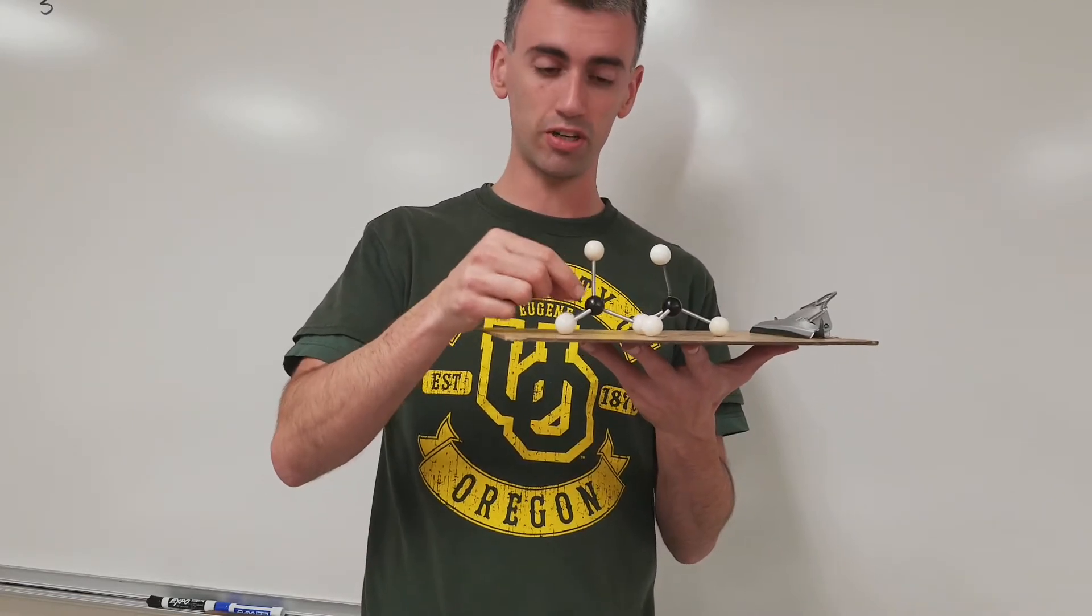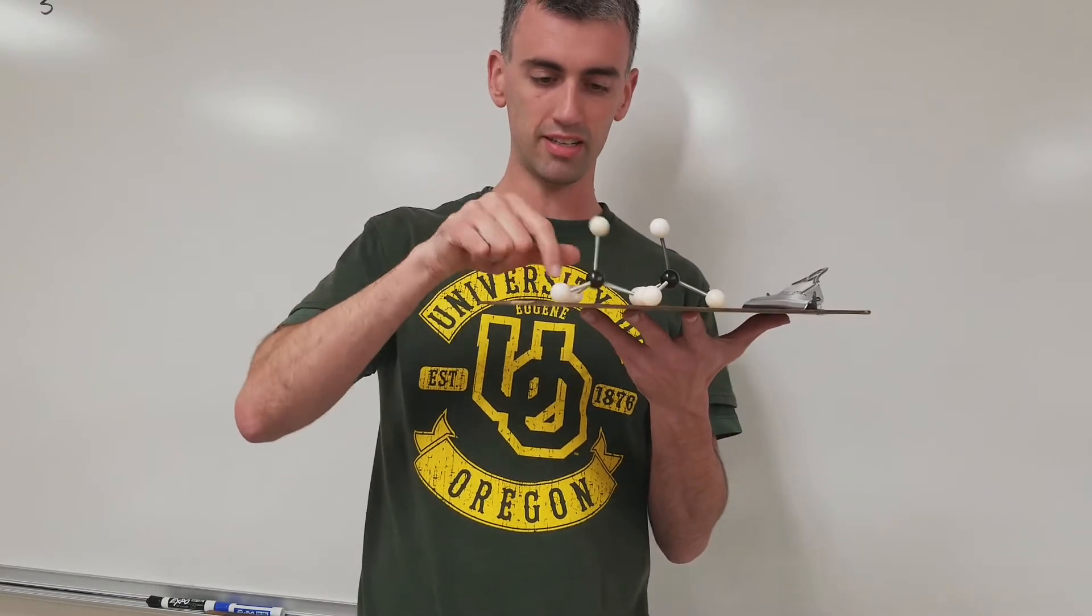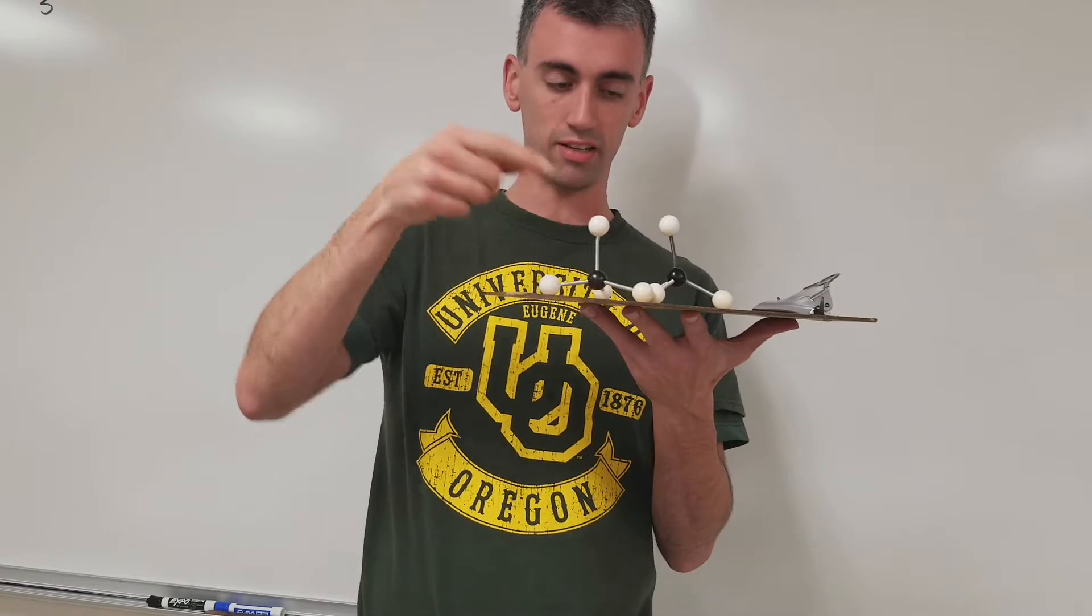The chemical bond is two shared electrons. This is two shared electrons, and so is this, and this, and this. So these are all two electrons: two, four, six, eight total.